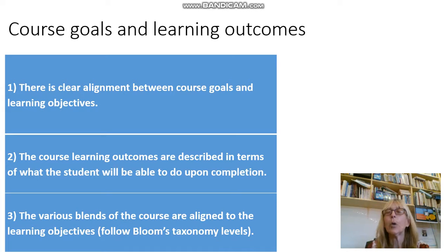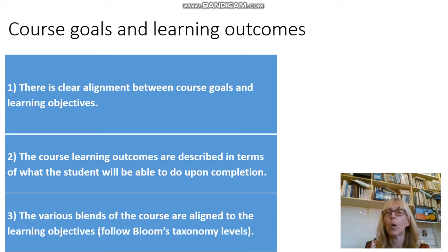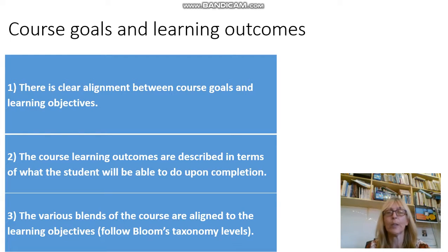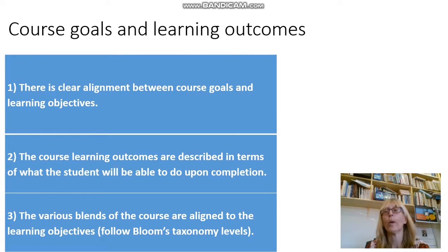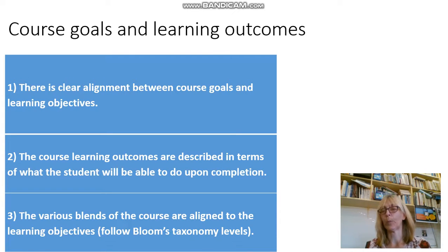The second component is the course goals and learning outcomes or objectives. You must make sure there is clear alignment between your goals and your objectives, and that your objectives or outcomes are described in terms of what your learner will be able to do when finished with the course. The various blends — what will be done online and what will be done in a face-to-face setting — must all be aligned to your learning objectives.